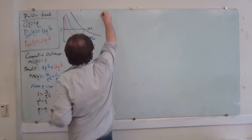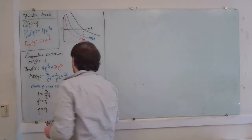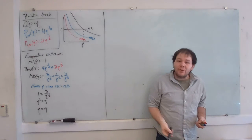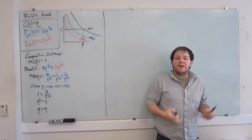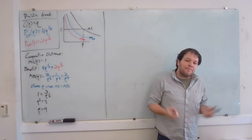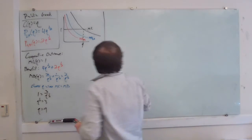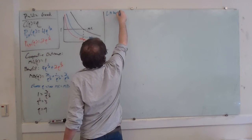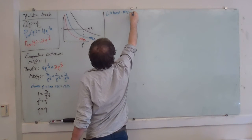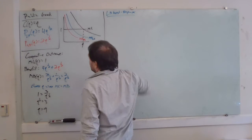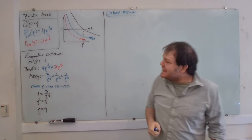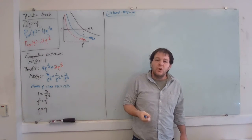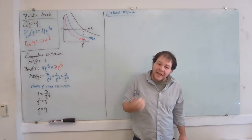Now let's think about what happens if each city makes their own independent decision — exactly the same way we thought about the decisions that Ford and GM are going to make. In other words, we're going to figure out San Diego's best response to LA, and LA's best response to San Diego. Let's start with LA. What LA is going to do is say: given how much San Diego is going to invest in the early warning system, how much should LA invest?